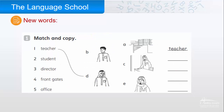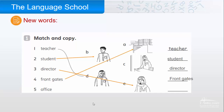Let's read the new words and match them to the pictures. One: teacher — Ibrahim is the teacher. Two: student — picture B is a student. Three: director — picture E is the director. Four: front gates — picture A. Five: office — picture C is the office.